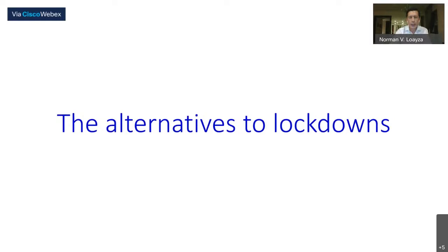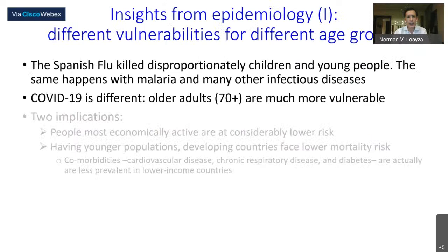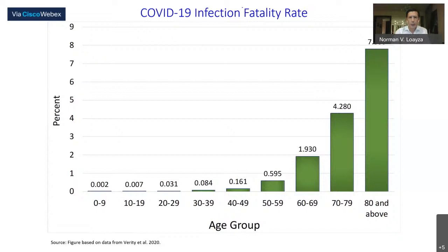So how do we understand these alternatives to lockdowns? I will use insights from epidemiology and economics — two disciplines that have communicated quite a lot in recent months. The first insight from epidemiology is that there are different vulnerabilities for different age groups. This pandemic is often compared to the Spanish flu of 1918, which killed disproportionately children and young people. COVID-19 is different: it is older adults, 70-plus especially, who are much more vulnerable to severe cases of the disease.